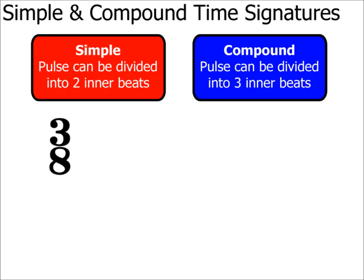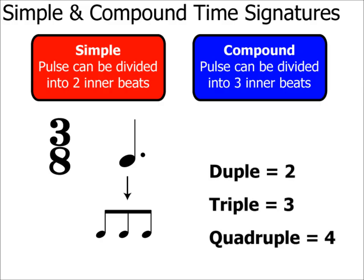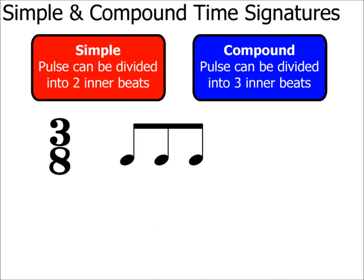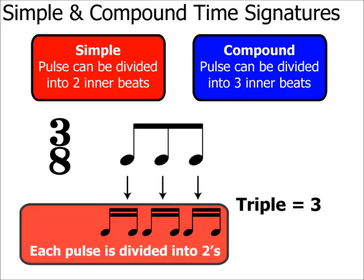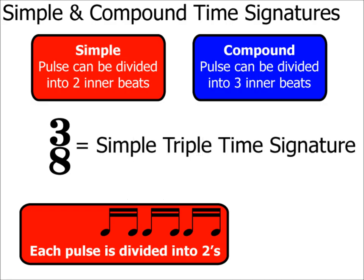I mentioned that 3/8 is somewhat of an anomaly. You might argue that in 3/8 there is one pulse — a single dotted crotchet — in each bar, and if you split that into equal inner beats you'd get three quavers, making it compound. However, the problem arises when you try to call it duple, triple or quadruple. If 3/8 has one pulse, there is no such word to describe one pulse in a bar. Therefore, we revert to the three quaver beats per bar: as there are three beats it is triple, and since each quaver splits into two semiquavers the beat divides into two, making it a simple time signature — or, to give it its full name, a simple triple time signature.